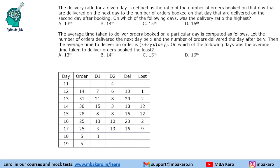The delivery ratio for a given day is defined as the ratio of orders booked that day delivered on the next day to orders delivered on the second day after booking. On which day was the delivery ratio highest? Delivery ratio is D1 divided by D2. If you observe, 15 to 3 is the highest ratio at 5 times. So delivery ratio is highest for day 14.